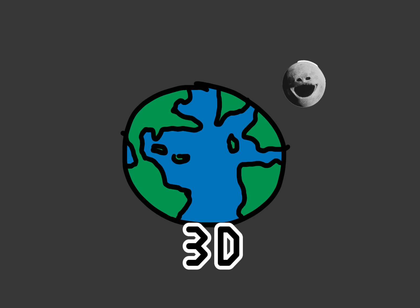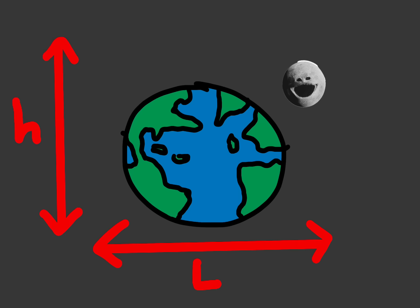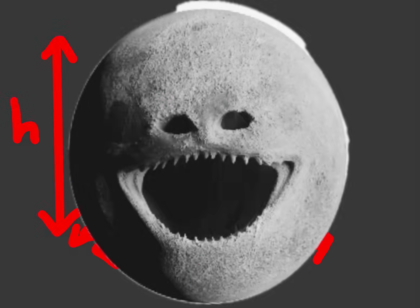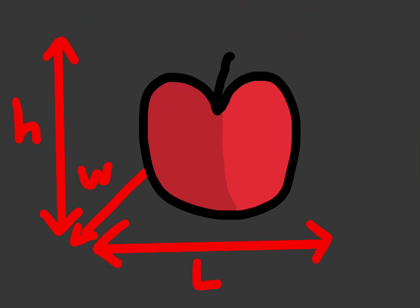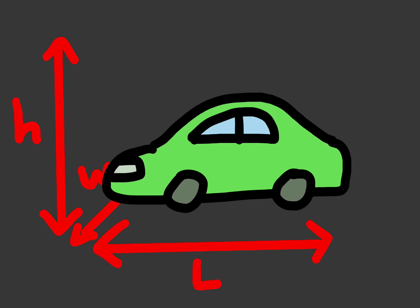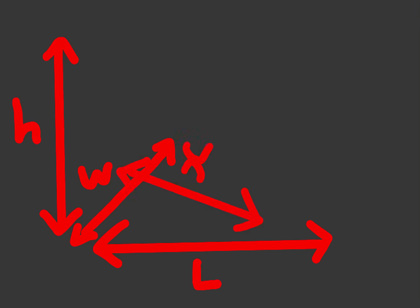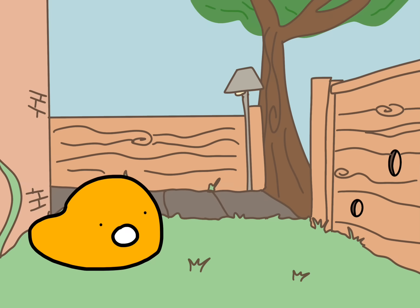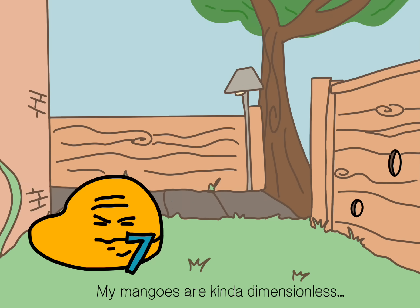Our world is three-dimensional, meaning it is made up of three planes, like height and width. All objects that exist have these. If you try to put another plane into the picture, it's simply not possible. So we're basically stuck with three dimensions, with no possible way of making it to seven.